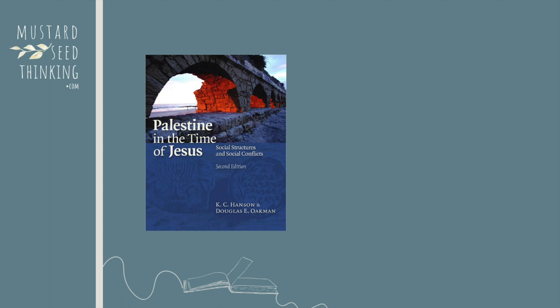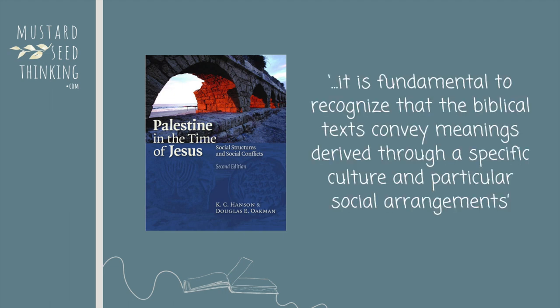Now we turn our attention to the social, political, and religious context that we are heading into. We're using our book, Palestine in the Time of Jesus by Hansen and Oakman, to help us. The authors propose that it is fundamental to recognize that the biblical texts convey meanings derived through specific culture and particular social arrangements. These authors make an interesting point that the biblical authors of the time would have been confident that their readers understood the cultural terms that they shared — their world. We do not share their social world; our experience of life is entirely different, and that greatly affects our understanding.